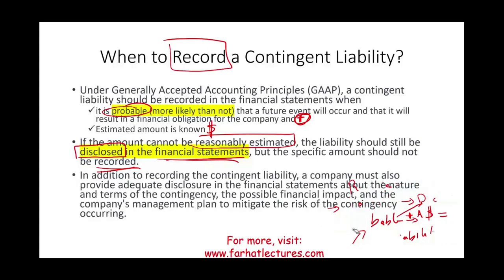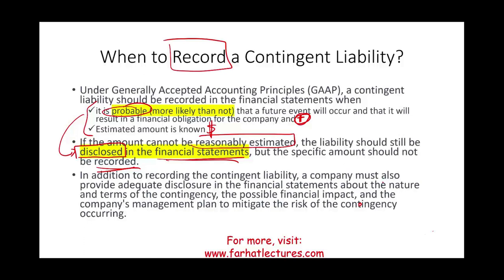In addition to recording the liability, the company must also provide adequate disclosure. Even if you do record a liability because both conditions exist, you still provide a disclosure note — for example, in which jurisdiction you are being sued, who is the plaintiff, why they are suing you, the potential outcome, how long it will take, those are all estimates. You must discuss them — not just say 'I have a lawsuit,' but explain where, who is suing you, for what purpose, in which jurisdiction, when you expect a response from the jury or judge, the potential financial impact, and the company's plan to mitigate the risk of that contingency occurring.